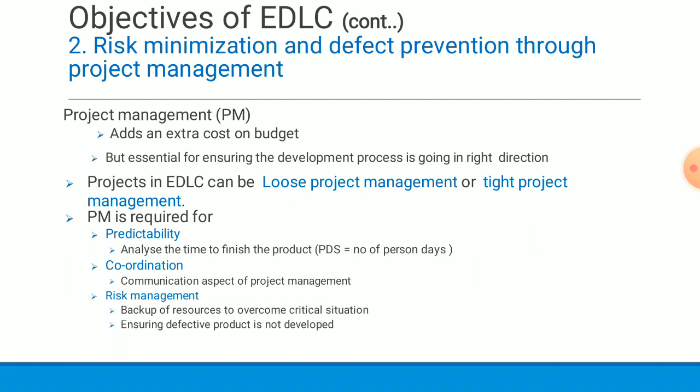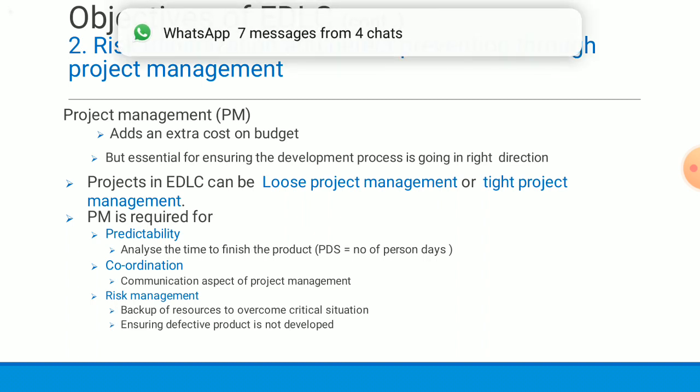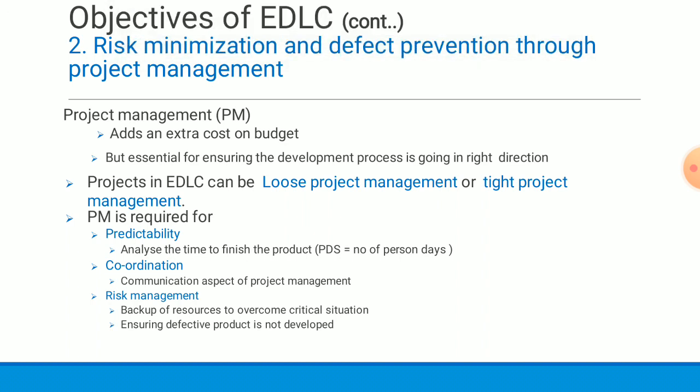Complex projects requiring timeliness should have a dedicated and skilled project manager — this is tight project management. Project management is essential for three things: predictability, coordination, and risk management. Predictability means providing an estimate on the duration and resources required for development and deployment to the end user or client.